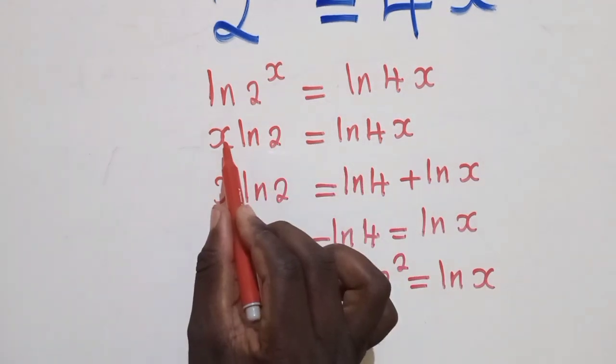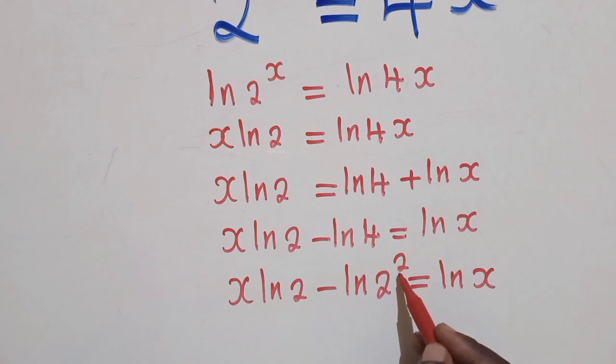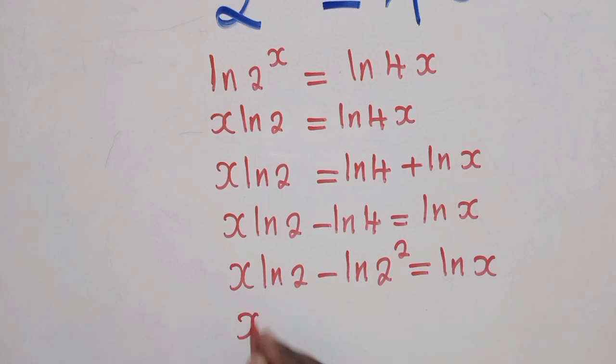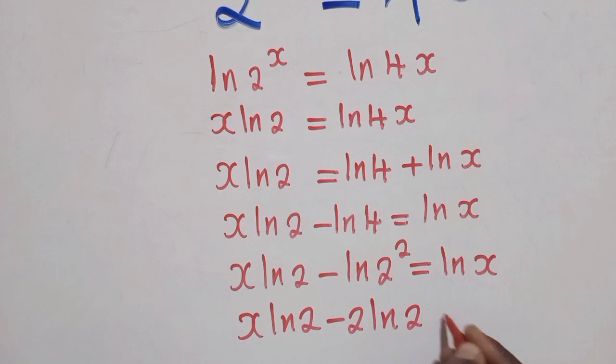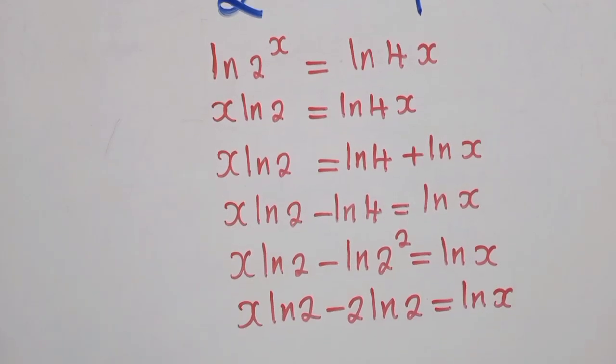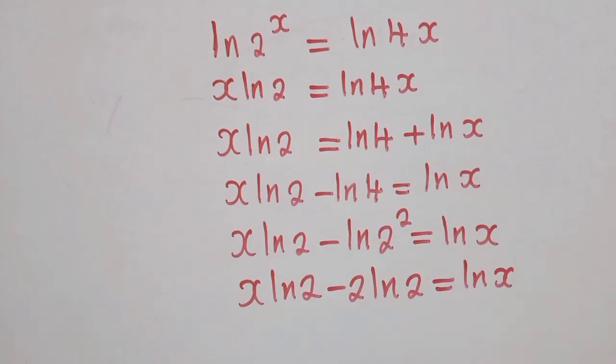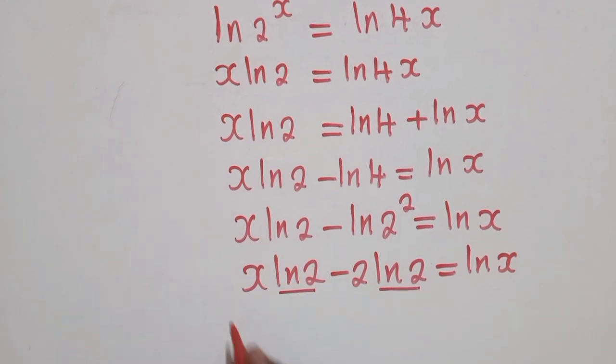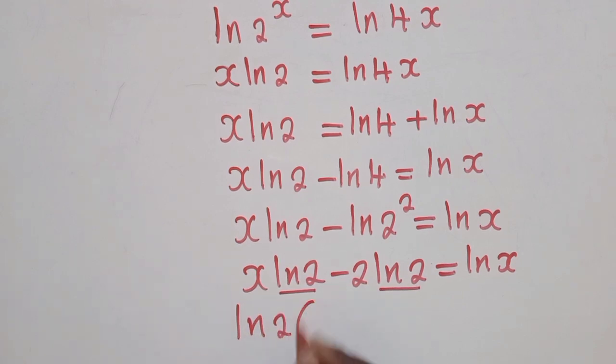Remember, it brought x right here in front. And this is what is going to happen right here. The power 2 will come in front. So we shall have x ln of 2 minus 2 ln of 2 is equal to ln of x. All right. So here, I think by now you're able to see something that is common. We have ln of 2 here and ln of 2 here. So we can factor it out. It will be ln of 2, open bracket, x minus 2 is equal to ln of x.